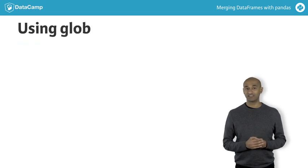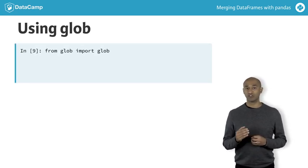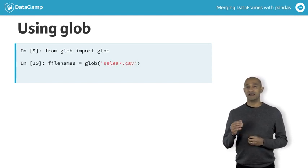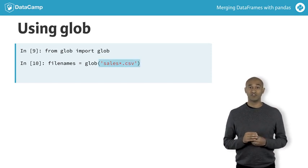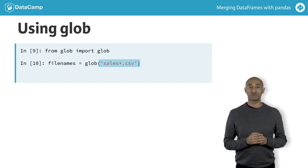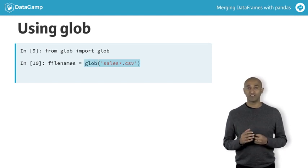When many file names have a similar pattern, the glob module from the Python standard library is very useful. We start by importing the function glob from the built-in glob module. We use the pattern sales*.csv to match any strings that start with the prefix 'sales' and end with the suffix '.csv'. The asterisk is a wildcard that matches zero or more standard characters. The function glob uses the wildcard pattern to create an iterable object, file_names, containing all matching file names in the current directory.